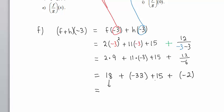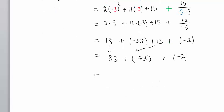18 and 15 is 33, plus a negative 33, plus this negative 2. We have 0 plus negative 2. Our answer is negative 2.